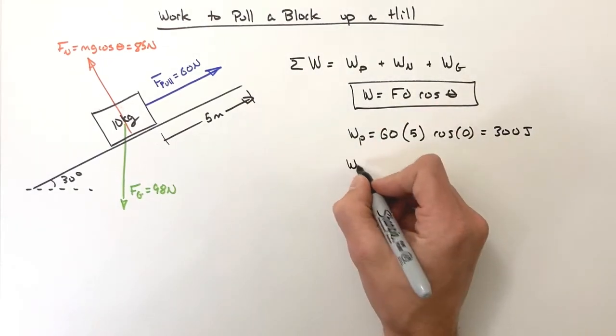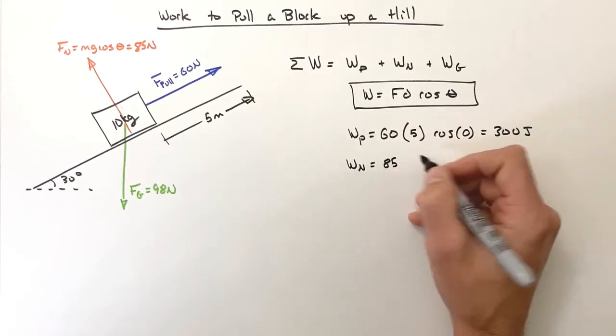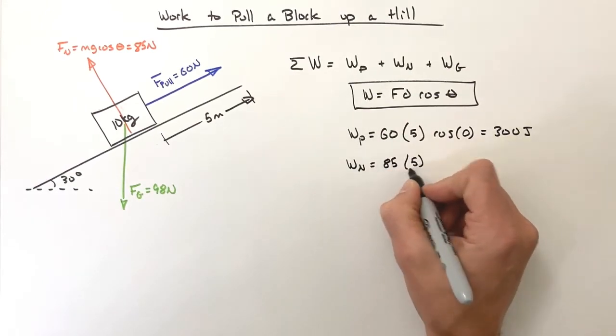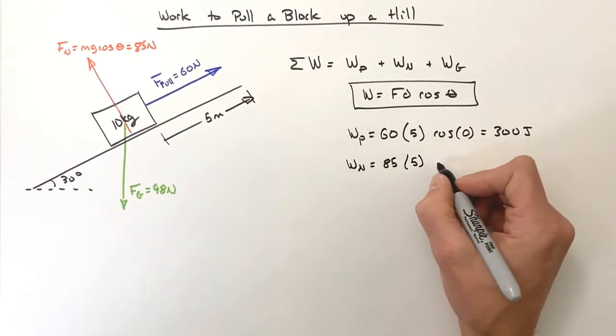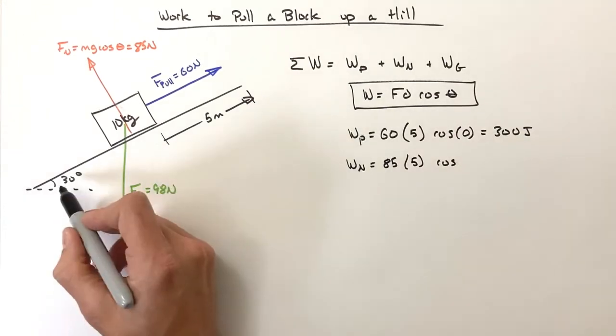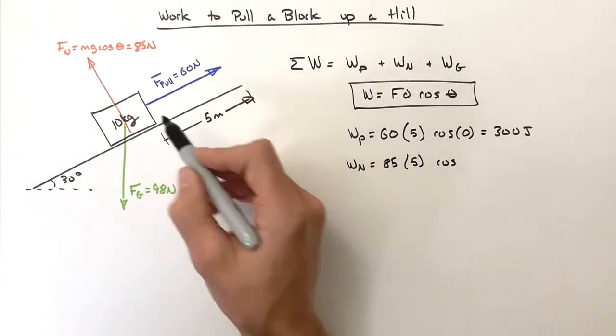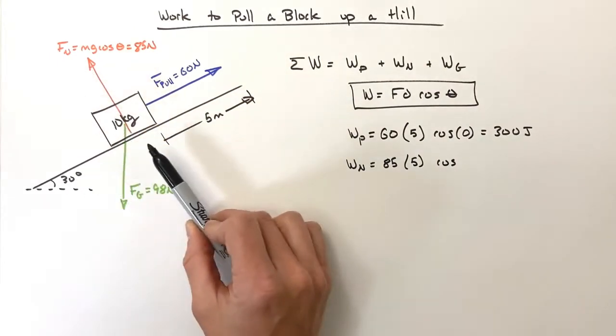Next we have the work by the normal force: 85 newtons times a displacement of 5 meters. And again it's tempting to pull these 30 degrees in, but realize the normal force is perpendicular to the hill.